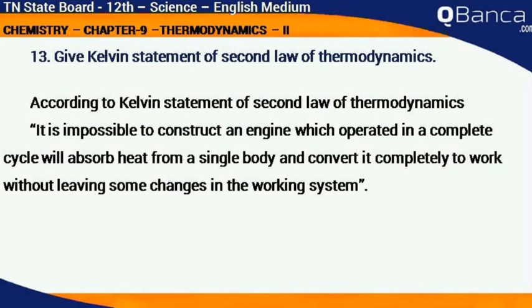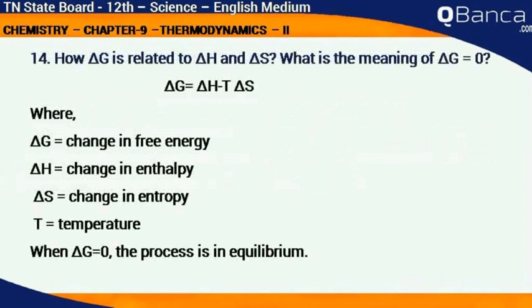How is ΔG related to ΔH and ΔS? What is the meaning of ΔG equals zero? ΔG equals ΔH minus T ΔS, where ΔG is the change in free energy, ΔH is the change in enthalpy, ΔS is the change in entropy, and T is the temperature. When ΔG equals zero, the process is in equilibrium.